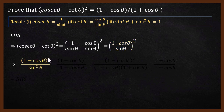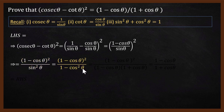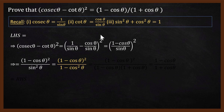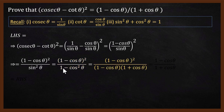This gives us 1 minus cos theta whole square divided by sin squared theta. We want to replace sin squared theta with 1 minus cos squared theta. Why are we replacing sin squared theta by 1 minus cos squared theta? Because we want to get the answer which is 1 minus cos theta by 1 plus cos theta. We then expand 1 minus cos squared theta as 1 minus cos theta times 1 plus cos theta, because this is like a minus b multiplied by a plus b equals a squared minus b squared.